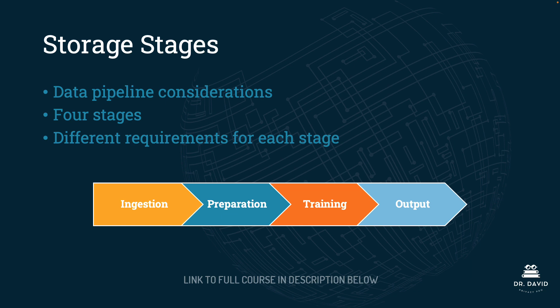The four stages are, as you see with this diagram at the bottom: ingestion, preparation, training, and output. We first ingest all of our data, then prepare that data for training. We use that data to train the model, and then once the model is trained, it is going to generate output. For each of these stages, we need to be prepared to store and work with the data.